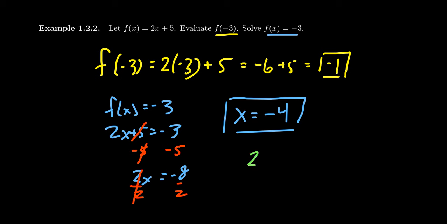If you evaluate at -4, you'll get 2(-4) + 5, which is -8 + 5. -8 + 5 equals -3, thus verifying that we have the correct solution.